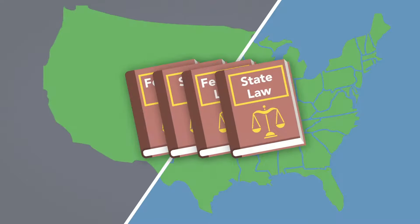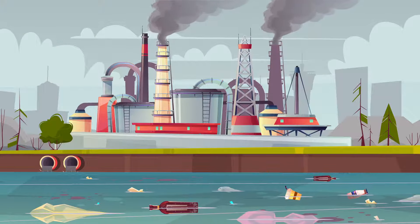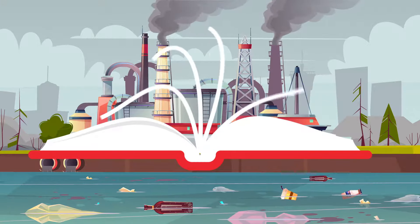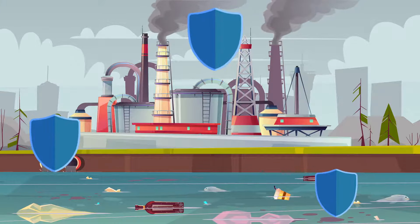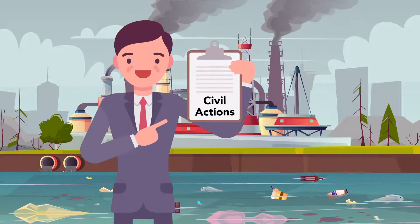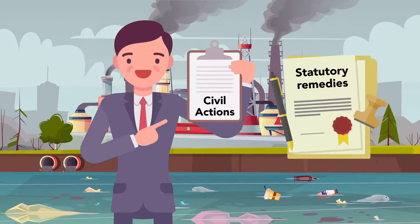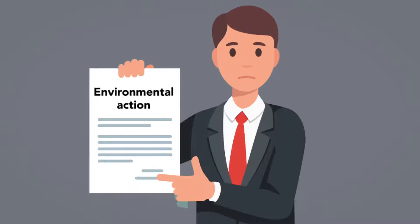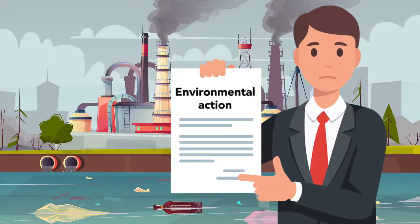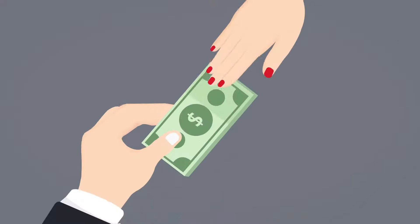There are myriads of state and federal laws directly regulating environmental pollution. American jurisprudence includes thousands of pages of laws designed to protect our land, air, and water. But there are still reasons that plaintiffs may prefer to bring civil actions under the common law rather than pursuing statutory remedies under federal environmental legislation. One benefit to bringing environmental actions under the common law is that it can be particularly effective in cases of localized pollution. Damages awarded in common law lawsuits are paid directly to the plaintiffs.